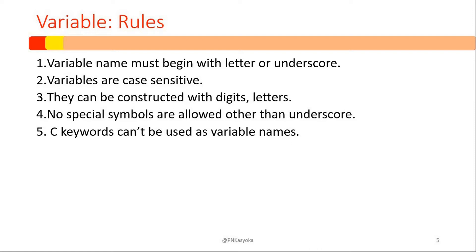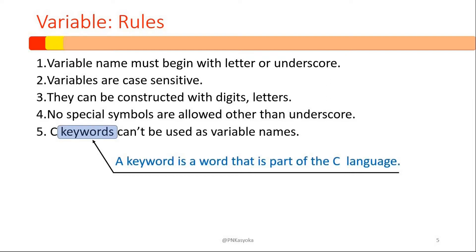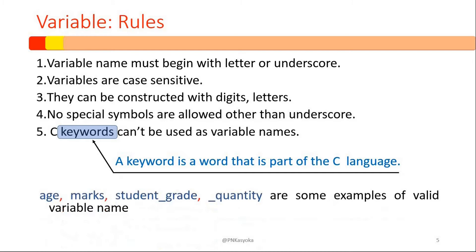C keywords cannot be used as variables. When we are talking of a keyword, it's basically a word that is a part of the C language. Here we have examples of some valid variables, such as age, max, student, and underscore_grade.